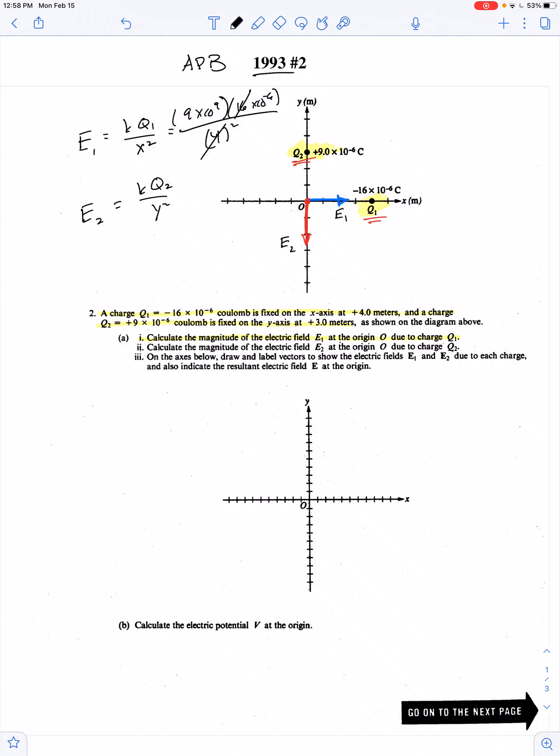And really, we just have 10 to the 9th and 10 to the negative 6th gives us 10 to the 3rd. And then we still have this 9. So E1 is equal to 9,000 newtons per coulomb, and it's directed to the right.